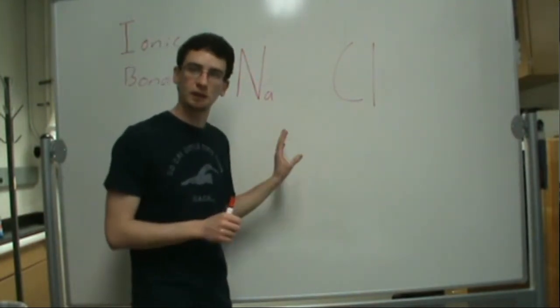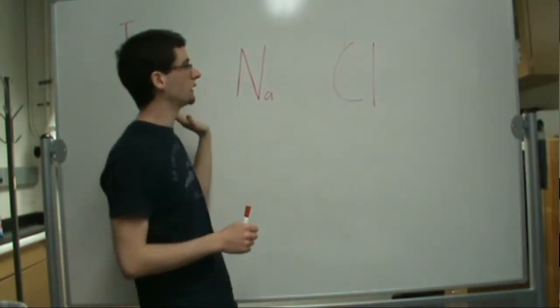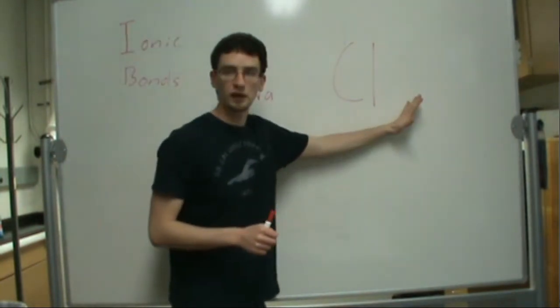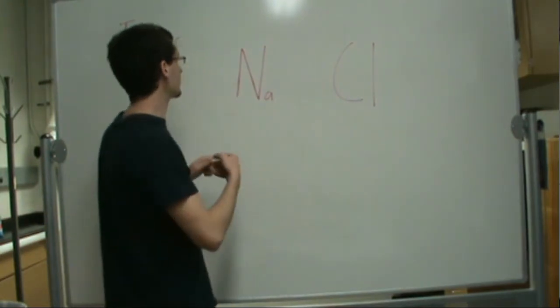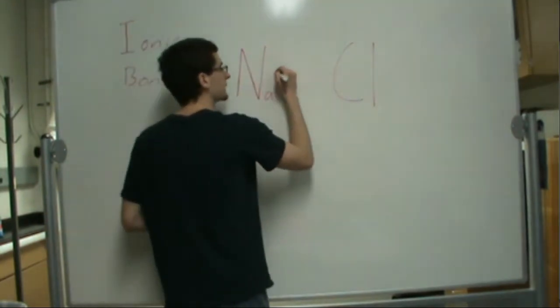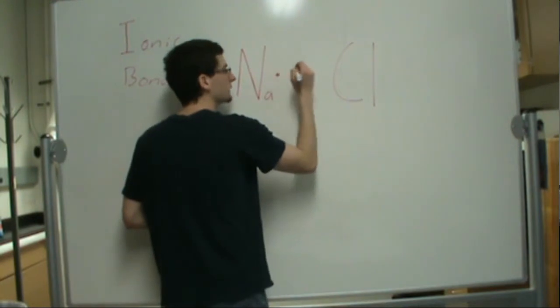Since we have this difference in electronegativity, all the electrons tend to go over to the chlorine and we're left with a positive charge on the sodium. A way you can think about this is: in a covalent bond the electrons are shared, but